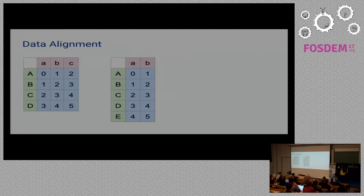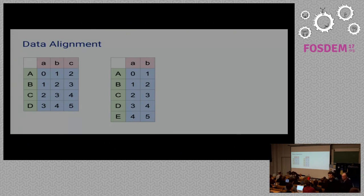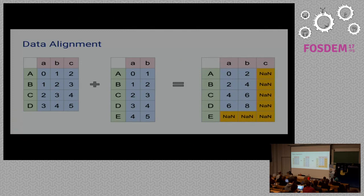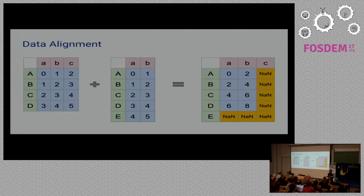Let's say we have two data frames. The first one has a, b, c, and d indices with a, b, and c columns, and the second one has a, b, c, d, e as indices and a, b as columns. If we decide to add them — and this is like addition, though not exactly arithmetic as we will see — it will return you this result.